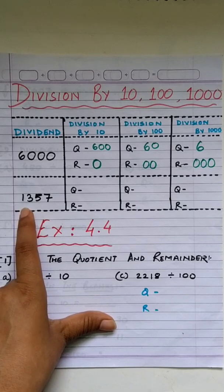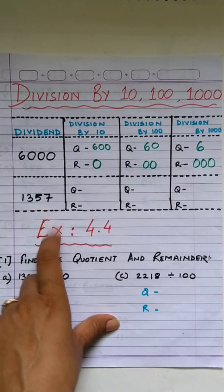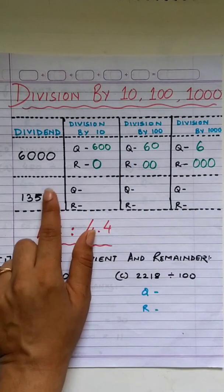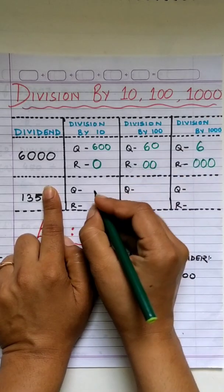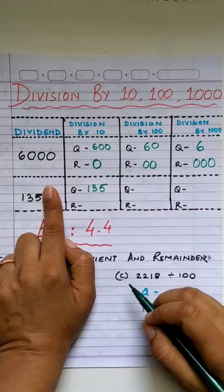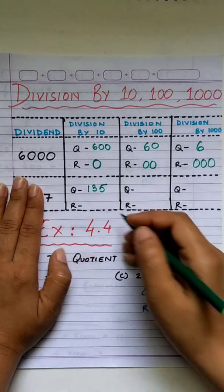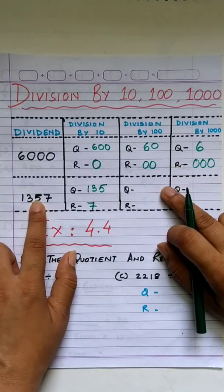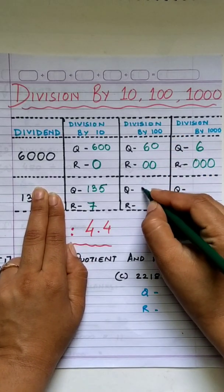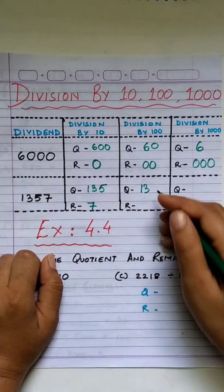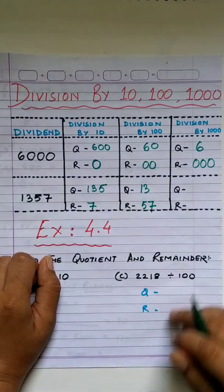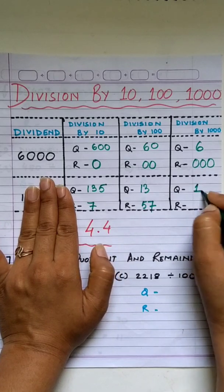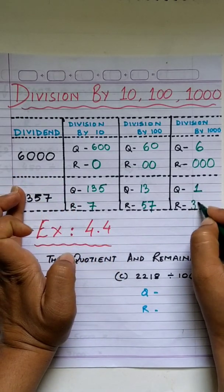Let's try one more. Divide 1,357 by 10 first. 10 has one zero, so hide one digit. Quotient is 135 and remainder is 7. When we divide by 100, hide two digits — quotient is 13 and remainder is 57. When we divide by 1,000, hide three digits — quotient is 1 and remainder is 357.